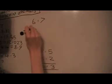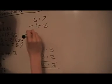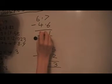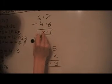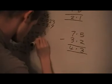Next one, I've got 6.7 minus 4.6. I've got 1, then I've got 2, so I get 2.1.